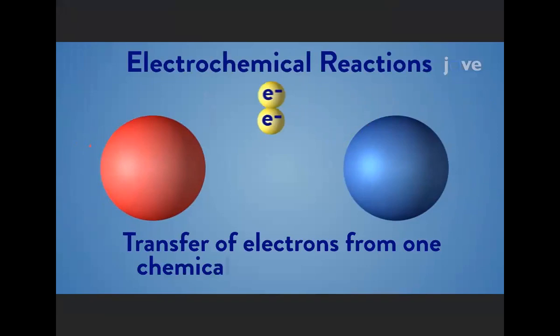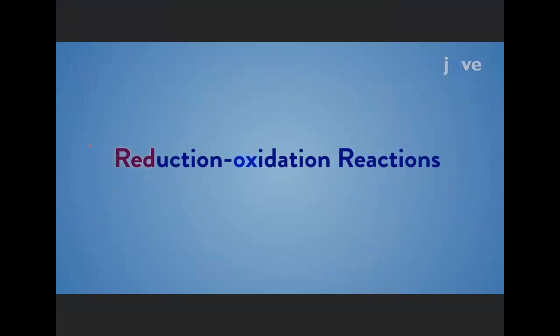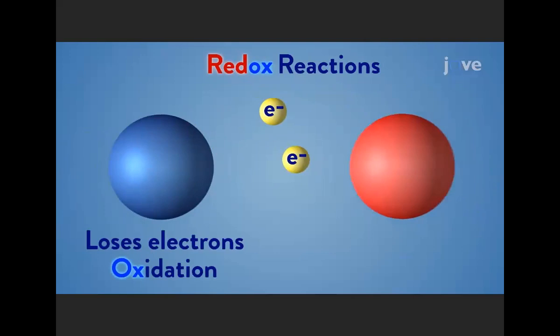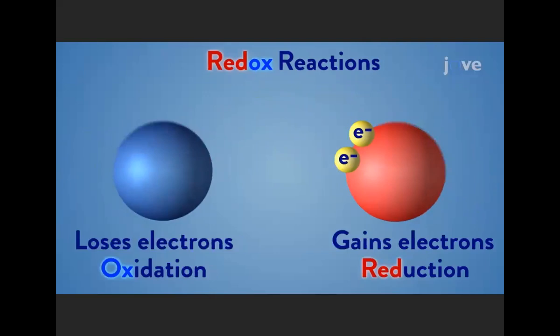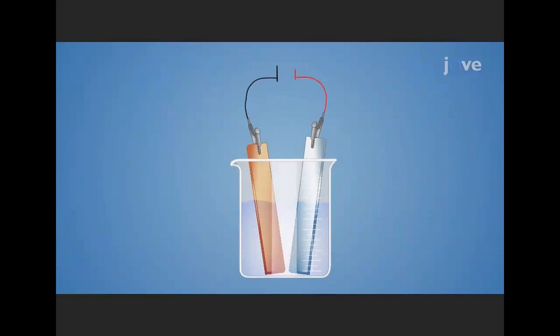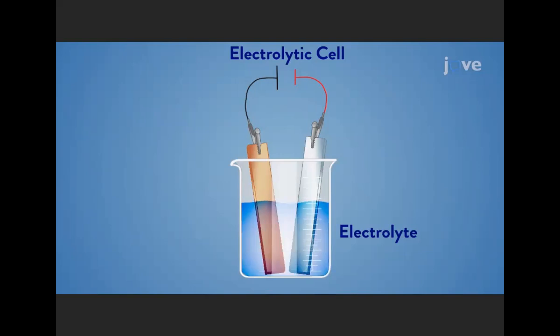When a species loses electrons, it undergoes oxidation and we say it is oxidized. When a species gains electrons, it has undergone reduction and we say it is reduced. In an electrochemical galvanic cell, redox reactions occur spontaneously, which generates electrical energy. In an electrolytic cell, electrical energy is applied, which causes the redox reactions to occur. An electrolytic cell consists of the reaction solution called the electrolyte, which contains any chemical species that are oxidized or reduced, as well as ions needed to enable electron flow.